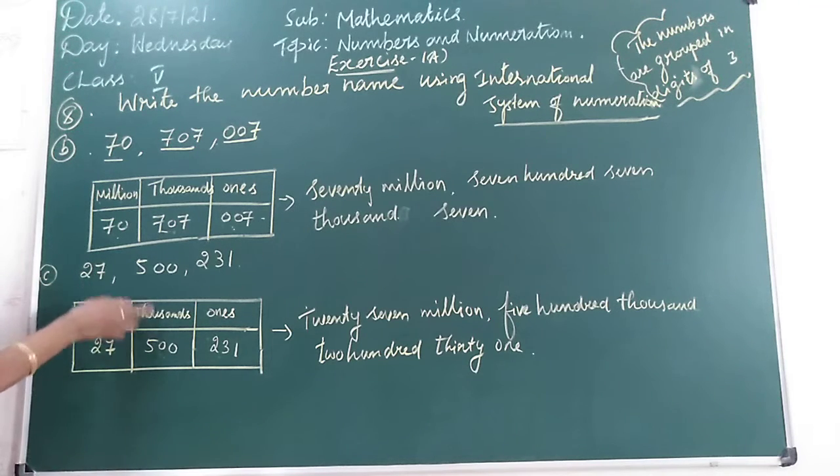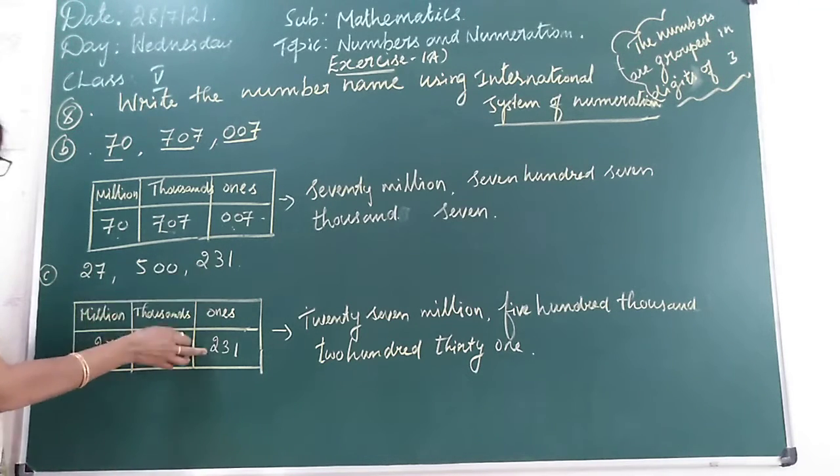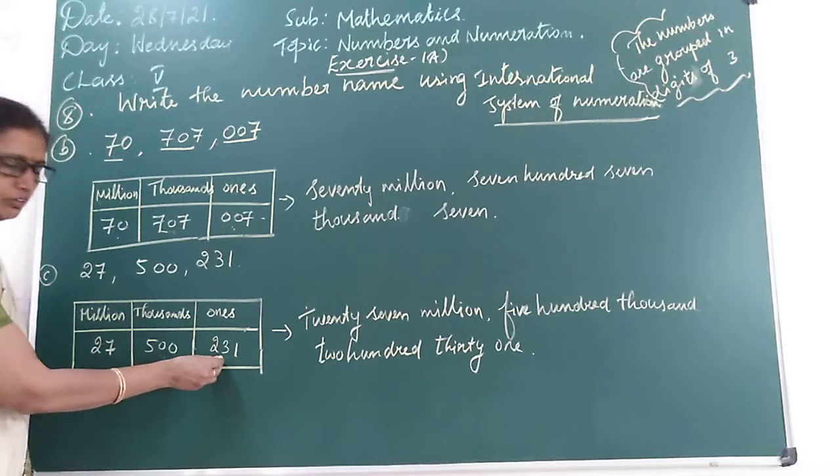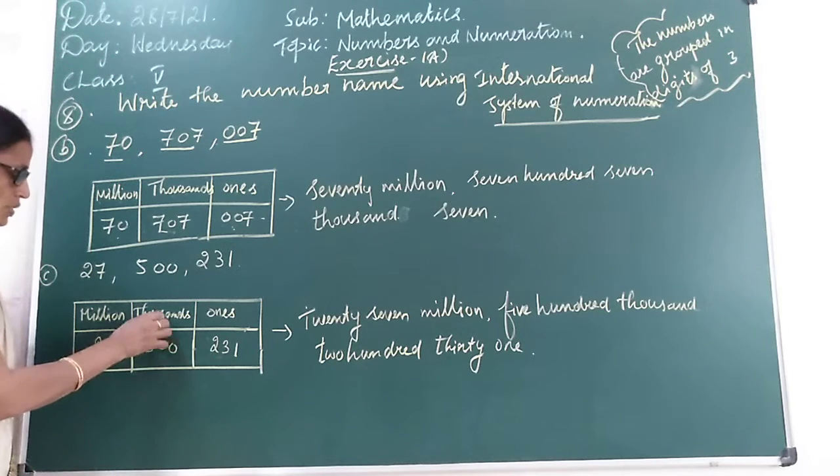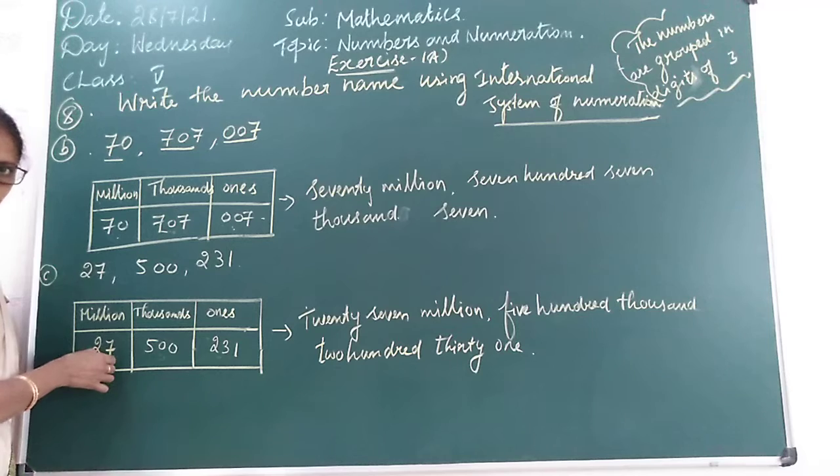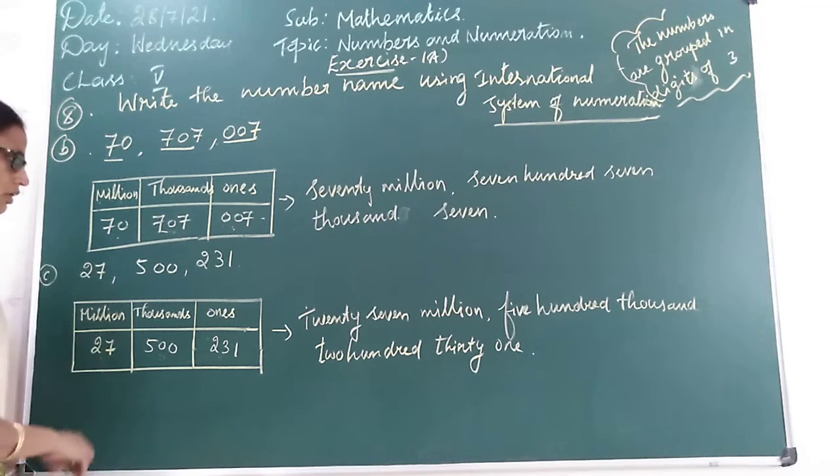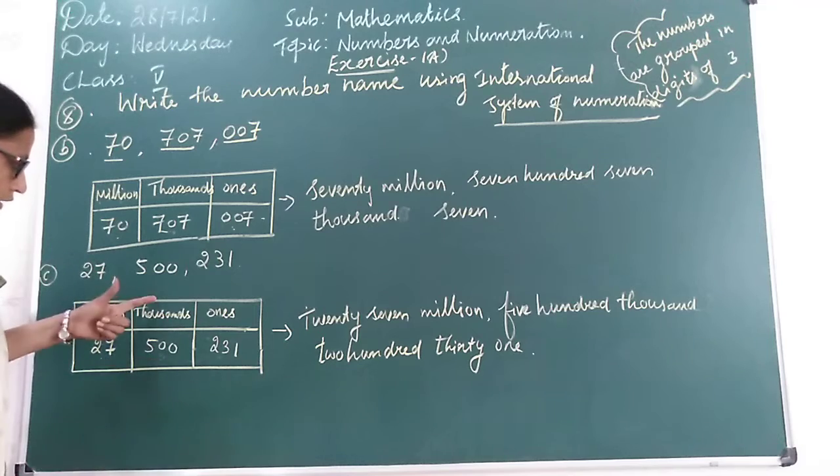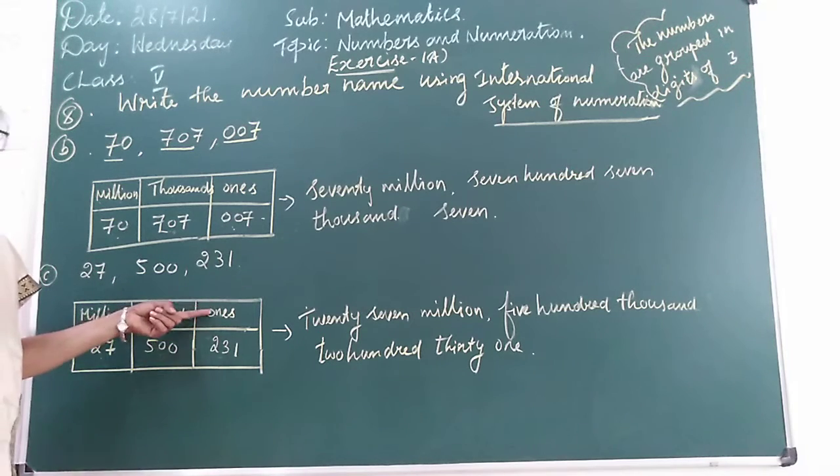27 million, five hundred thousand, two hundred and thirty-one. Enter the digits in the place value chart. In ones place we have 231. In thousands place we have 500. In millions place we have 27. So how will you write this number, children? 27 million, five hundred thousand, two hundred and thirty-one.